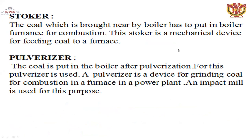The pulverizer: the coal is put into the boiler after pulverization, for which the pulverizer is used. It is a device used for grinding coal for the combustion side in a power plant. An impact mill is used for this purpose.